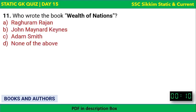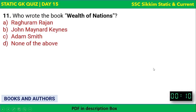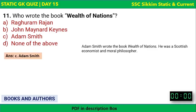Who wrote the book 'Wealth of Nations'? The options are Raghuram Rajan, John Maynard Keynes, Adam Smith, or none of the above. The correct answer is Adam Smith — a Scottish economist and moral philosopher who wrote 'The Wealth of Nations.'